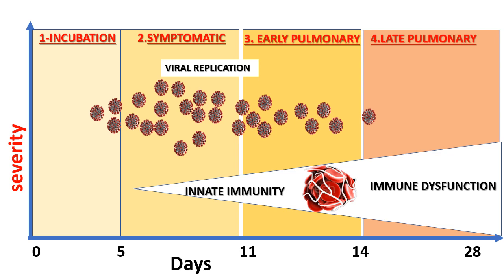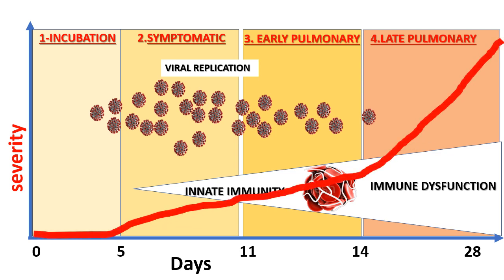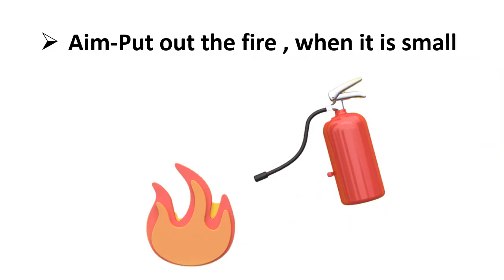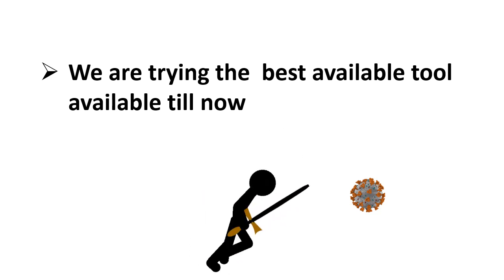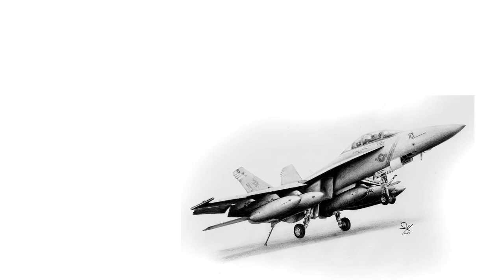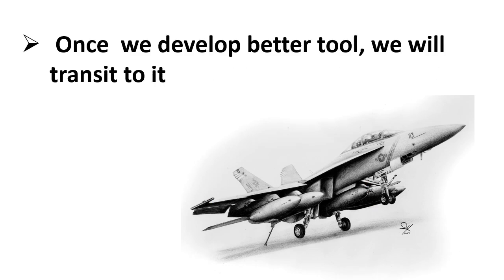Simultaneously, we activate our immune system in the symptomatic phase. But if we are not able to control the disease, our immune system becomes deregulated in the later pulmonary phase, leading to cytokine storm, macrophage activation syndrome, and eventually death. One approach is to treat in the early phase itself — to put out the fire when it is small — thereby preventing disease progression to more complicated stages. Right now we are trying to use the best available tool against the virus, and once we develop better tools we will transition.